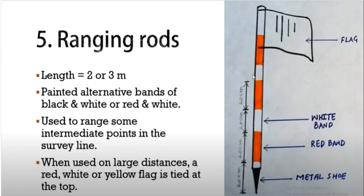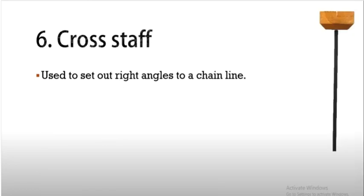The ranging rod is used to range intermediate points in the line. When used over large distances, red, white, or yellow flags are tied at the top. This is for visibility in surveys. The top of the ranging rod has a flag. We can use red and white, or yellow flags at the top of the ranging rod.